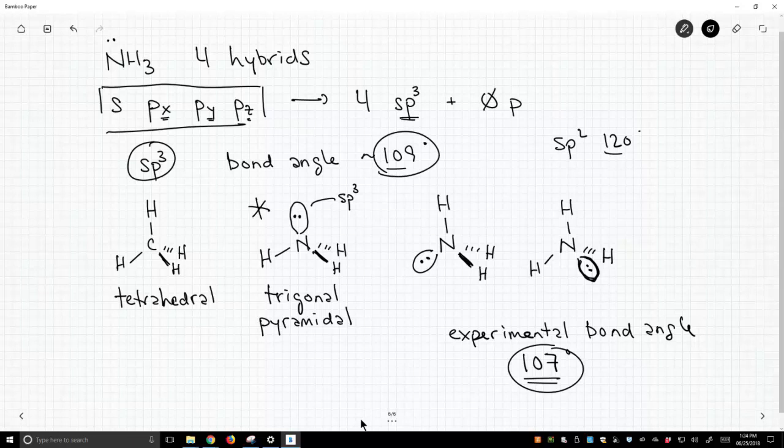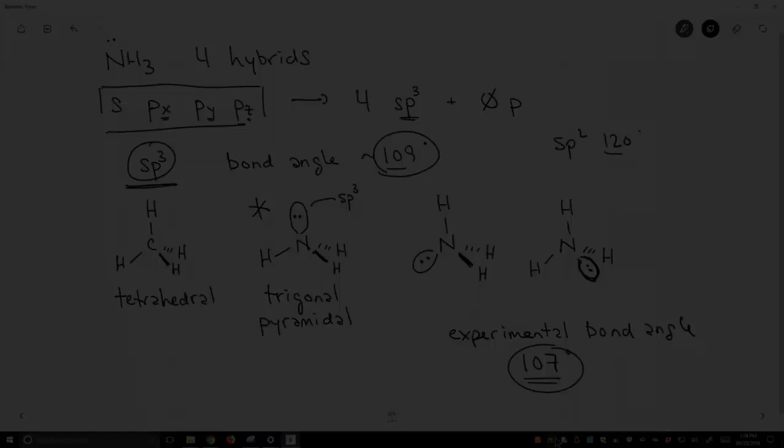Therefore, the experimental data is much more consistent with ammonia having sp3 hybridization. And so that's what people will say. Ammonia is an sp3 hybridized nitrogen atom. And we know that because the experimental data backs it up. So we have two options, but one fits the experimental data. So we'll go with it.